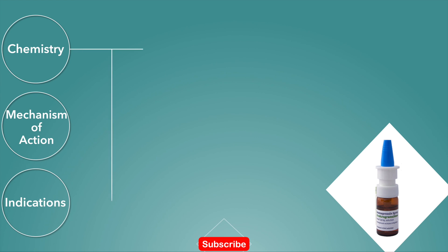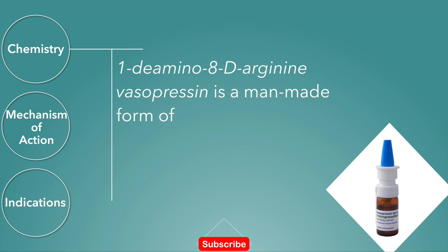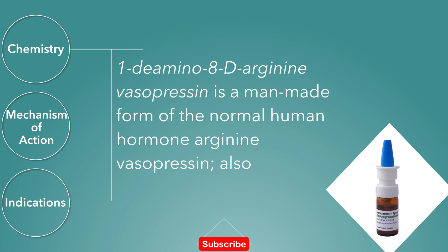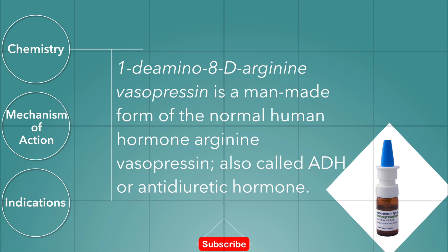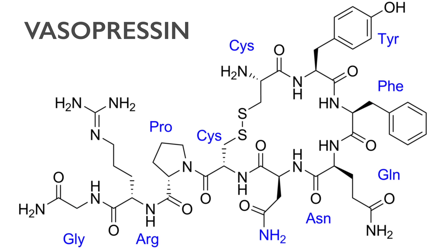Desmopressin is a synthetic version of vasopressin, the hormone that reduces urine production, also called ADH or antidiuretic hormone. In the body, this hormone is usually produced by the hypothalamus. Compared to vasopressin, desmopressin's first amino acid group has been deaminated, which means that the first amino acid group has been removed, and the arginine at the eighth position is in the dextral rather than the levo form.